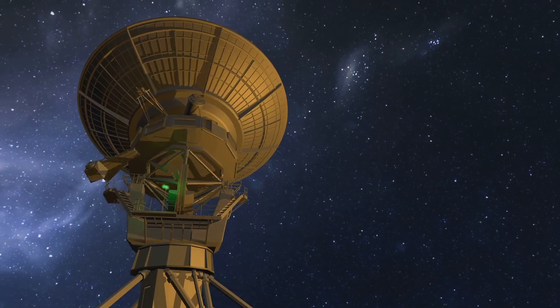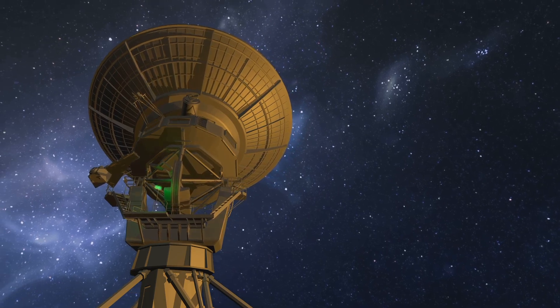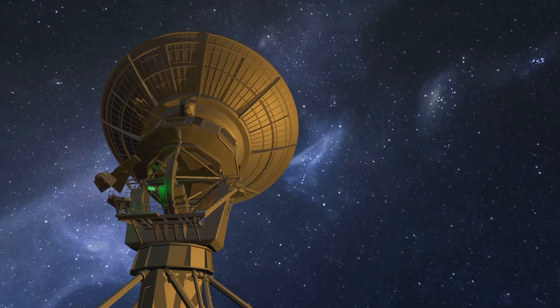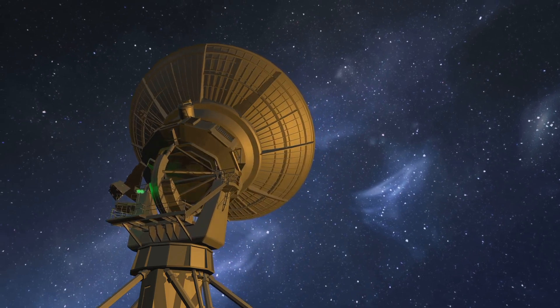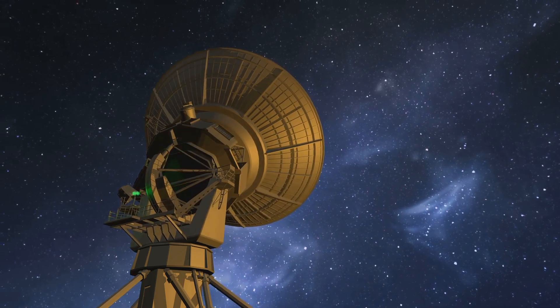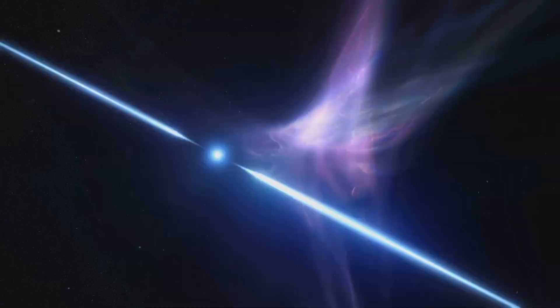Most pulsars, rapidly spinning neutron stars, emit pulses as they rotate, but they usually spin incredibly fast, ranging from milliseconds to a few seconds per rotation. A pulsar taking 22 minutes? That's unheard of.